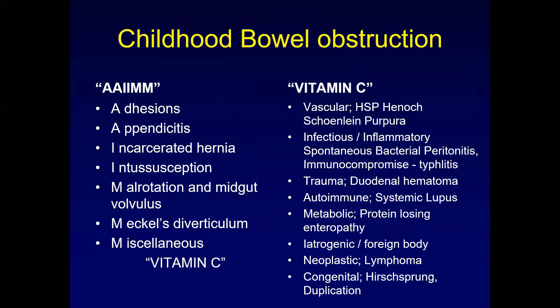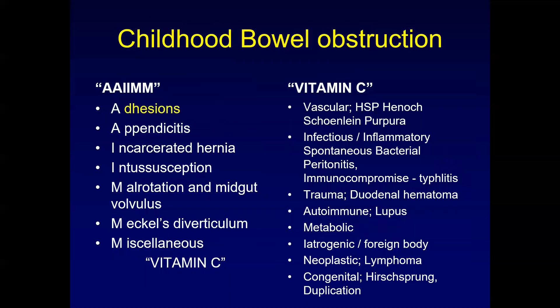The mnemonic AIM — A-A-I-I-M-M — is a great way to remember the major factors in pediatric bowel obstruction. Many other causes exist as well, using the mnemonic VITAMIN C for your differential diagnosis, such as vascular causes and Henoch-Schönlein purpura, which will not be covered in this 15-minute segment. Being familiar with the age and clinical presentation will lead you to the appropriate radiographic workup for the pediatric bowel emergency at hand.